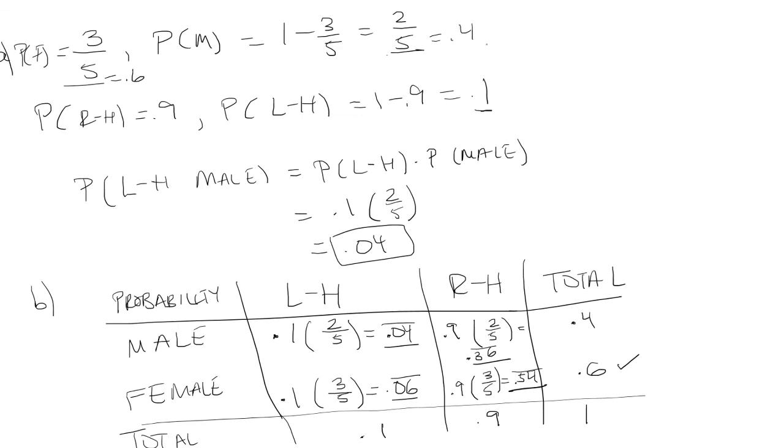Which is 0.4. And if you go to the male row, you also get 0.4. The probability we have a right-handed person is 0.9. So if we go down the column, we get 0.9, which is good. And the left-handed person is 0.1, which we also have 0.1. So this looks correct.